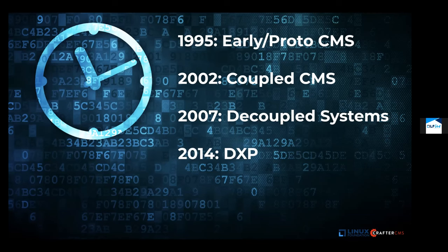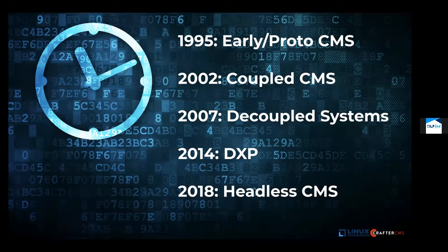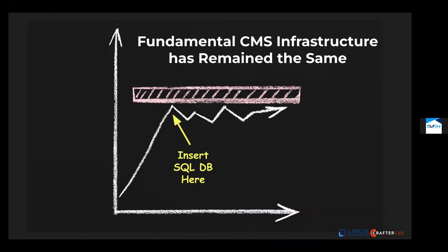By 2018, it had become clear to everyone developing for and around CMS that some kind of significant architecture change was badly needed. Headed DXP solutions could not really support the innovation around the emerging channels, and something had to give at that point. We really see headless CMS take center stage. What we're going to be looking at in more detail is how the headless architecture has changed things — for example, it's changed the presentation tier — but since the early 2000s, there's been no significant change on the backend.